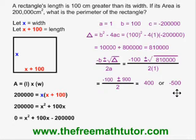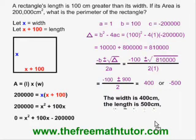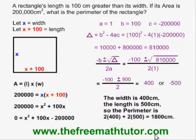But I'm not quite finished answering this question. The question asks for the perimeter, so I'm going to plug the values of 400 width and 500 length into the perimeter formula. And this shows me that the perimeter of this rectangle is 1,800 centimeters.